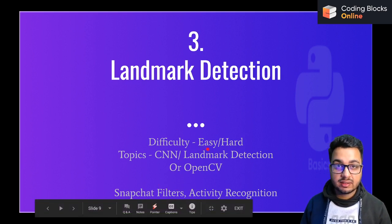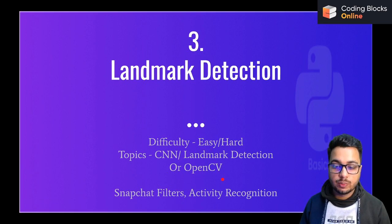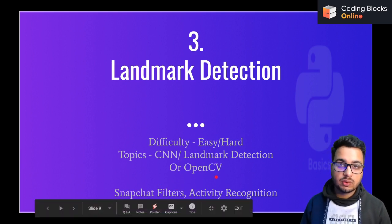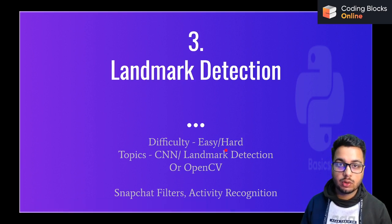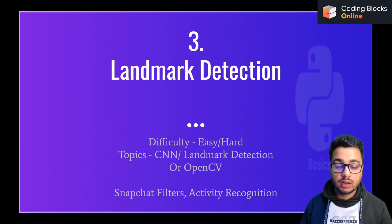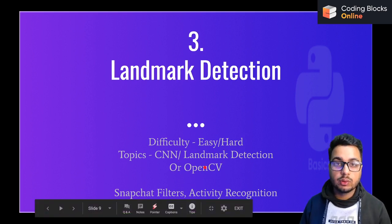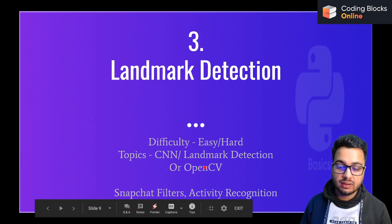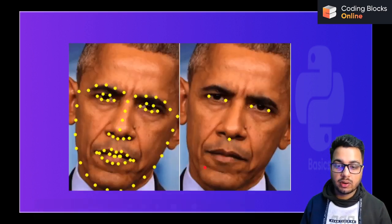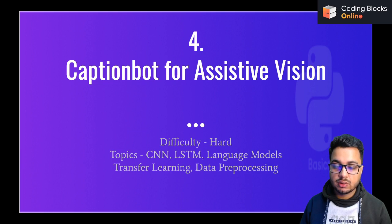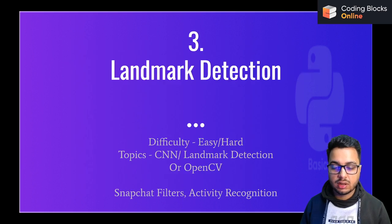The difficulty is rated as easy if you use Haar cascades and OpenCV, as we covered in the online course. But if you want to do something advanced and build your own model, you have to use a CNN plus regression approach. Once you get the key points, you can use them to build a Snapchat filter or classify what type of activity a person is doing.